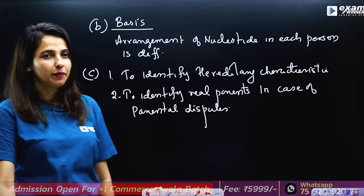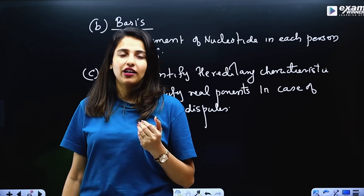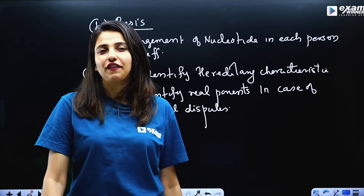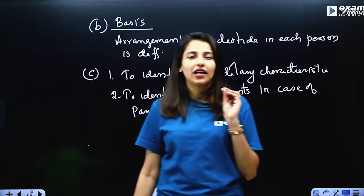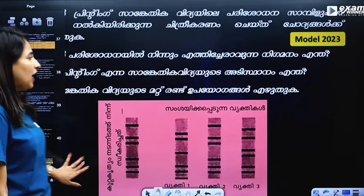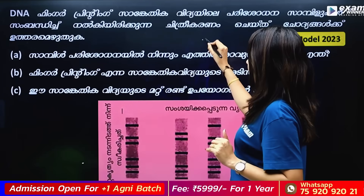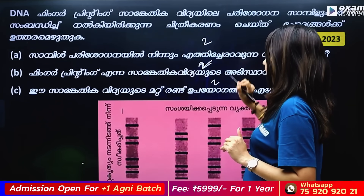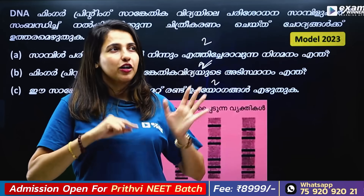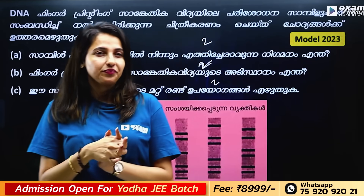Another use is in natural calamities — when a child is found after many years, DNA fingerprinting can be used to identify them. This is a 3-mark, 2-mark, 2-mark, and 4-mark question. Gene technology terms include genetic scissors, genetic glue, plasmid, gene mapping, and gene therapy.